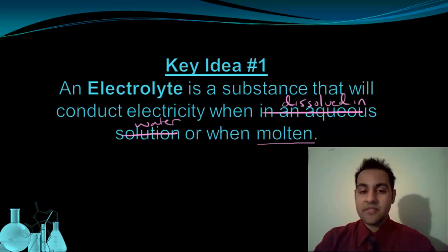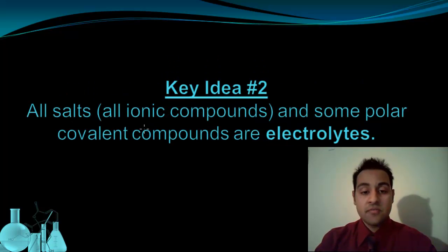So an electrolyte is something that conducts electricity when dissolved. But what kinds of things are electrolytes? Well, all salts, so all ionic compounds, and some polar covalent compounds are electrolytes. All salts are electrolytes. But why? How does this happen? What is it about salts that allows them to conduct electricity when you dissolve them in water?